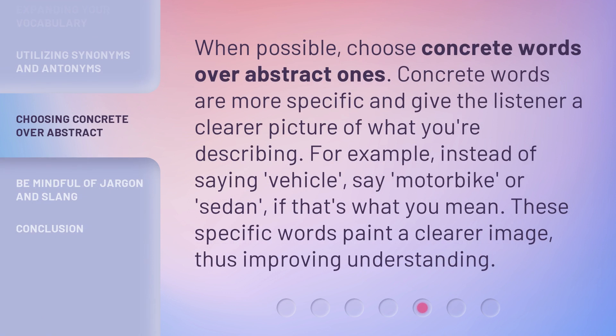When possible, choose concrete words over abstract ones. Concrete words are more specific and give the listener a clearer picture of what you're describing. For example, instead of saying 'vehicle,' say 'motorbike' or 'sedan' if that's what you mean. These specific words paint a clearer image, thus improving understanding.